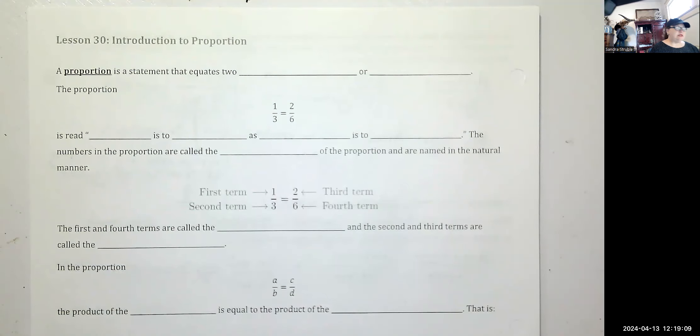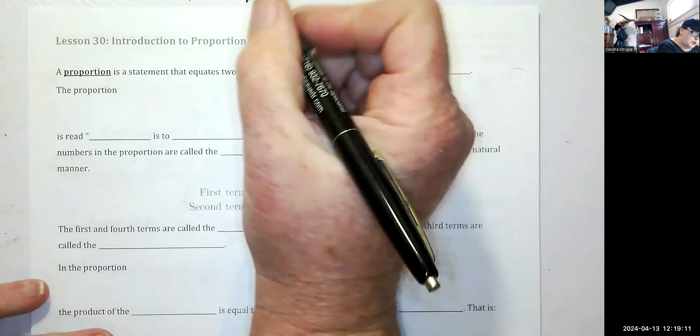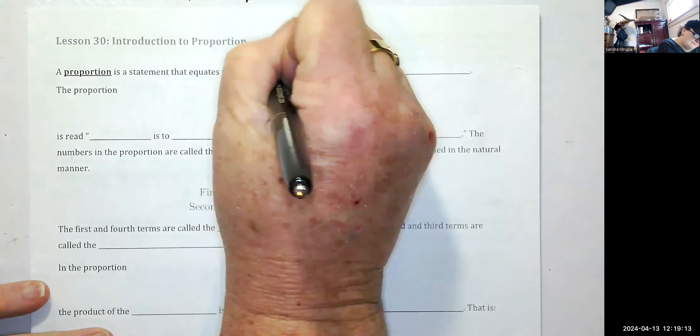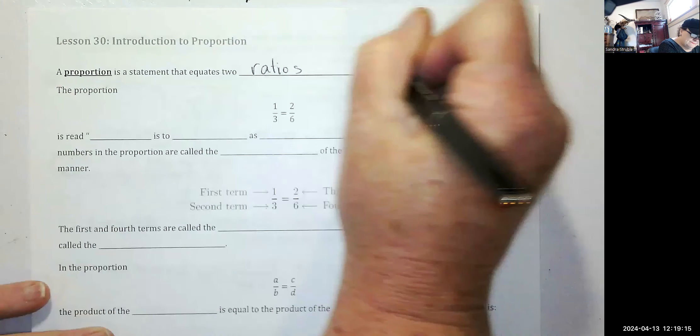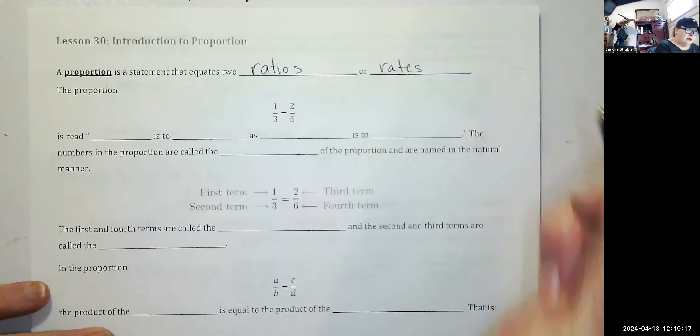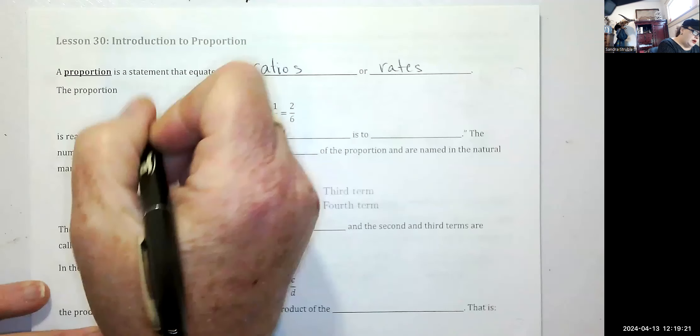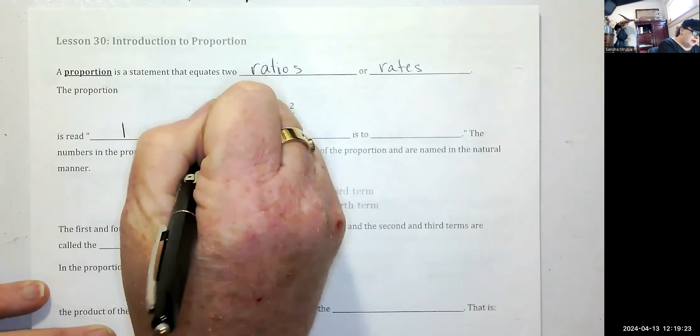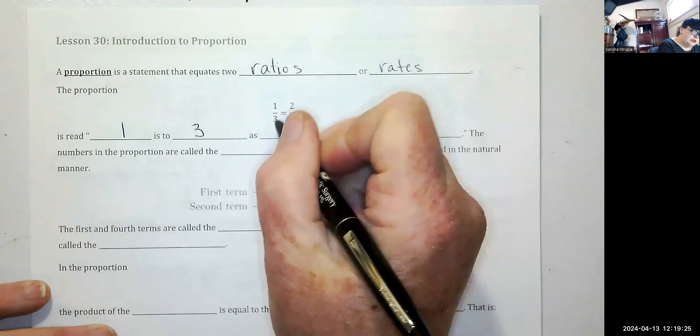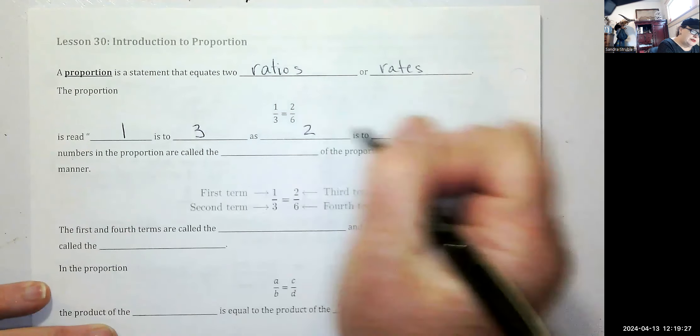A proportion is a statement that equates two ratios or rates. The proportion is read one is to three as, for this one, one is to three as two is to six.